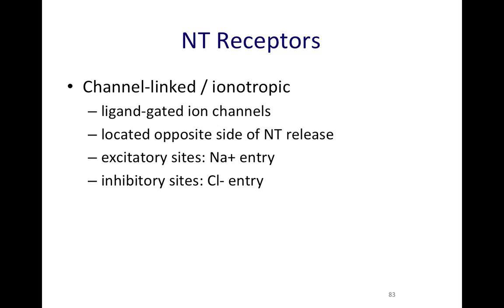A chemical binds to an ion channel and then the ion channel will open up. These channels will be on the opposite side of where the neurotransmitter is released. The neurotransmitter is released from the presynaptic neuron, diffuses across the synaptic cleft, and binds to its receptor on the postsynaptic neuron's membrane. If it's an excitatory site, sodium will be allowed to enter and you'll see a depolarizing effect. If it is an inhibitory site, chloride will enter and that negative charge coming in will cause hyperpolarization.